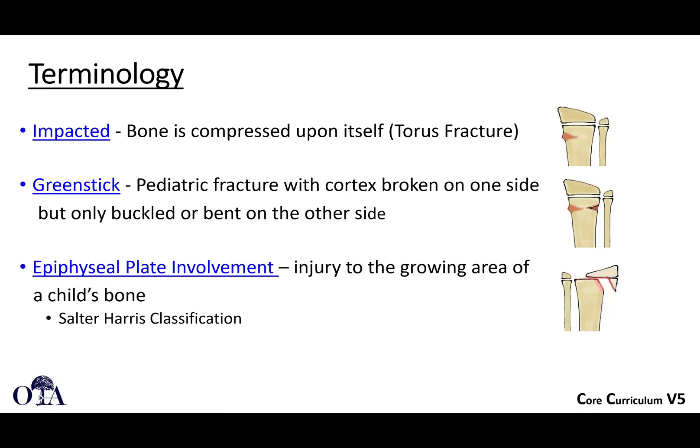Another thing that can happen in pediatric cases is a greenstick fracture. As opposed to a dry piece of wood you can snap in half like chalk, if you try to snap a live branch from a tree in half, it may break only on one side and just bend on the other. That is called a greenstick fracture, and it can also happen in kids.